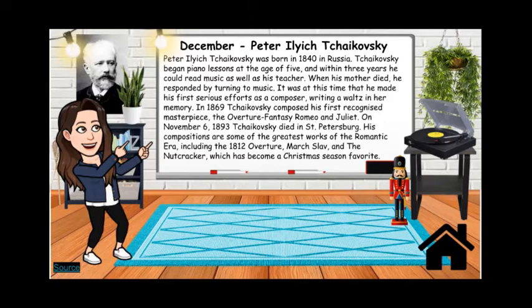On November 6, 1893, Tchaikovsky died in St. Petersburg. His compositions are some of the greatest works of the Romantic era, including the 1812 Overture — which features real cannons — March Slav, and the Nutcracker, which has become a Christmas season favorite.